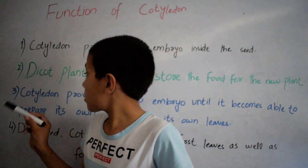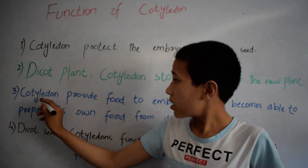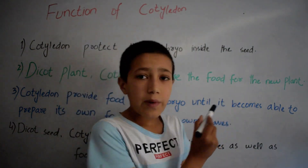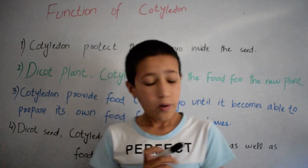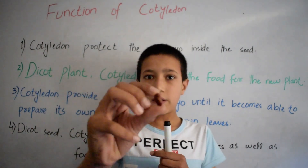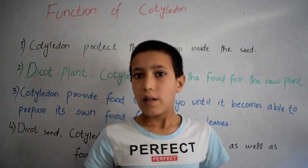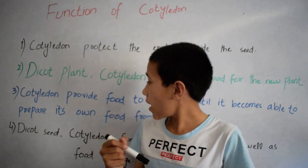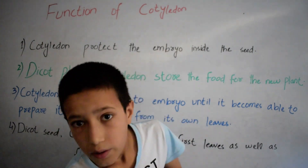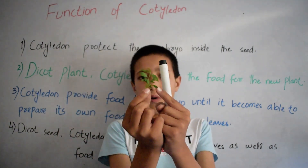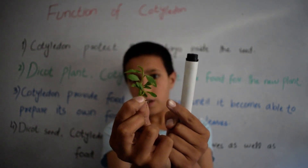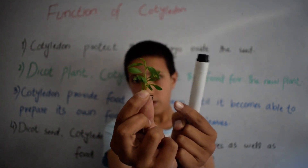The third function of cotyledon is that it provides food to the embryo until the embryo becomes able to prepare its own food from its own leaves. This is cotyledon, and it provides food to the embryo until the plant grows its leaves and can make its own food.